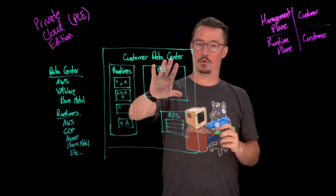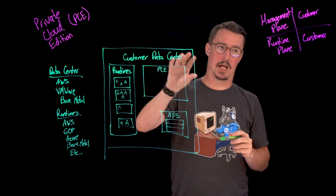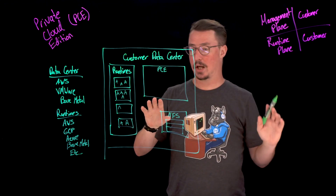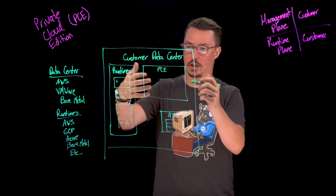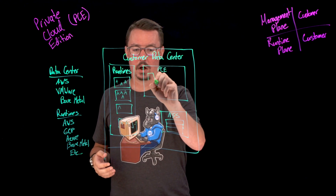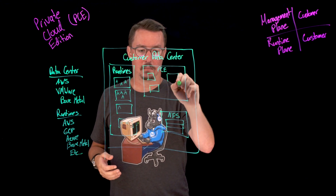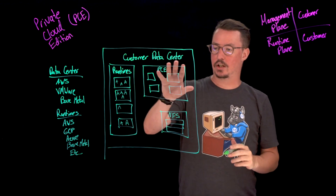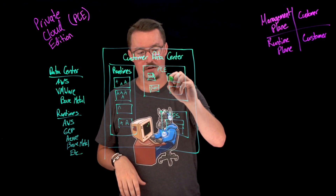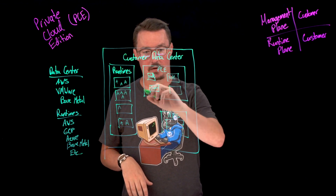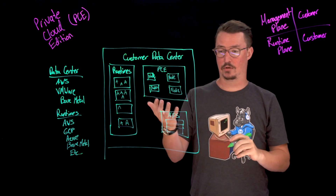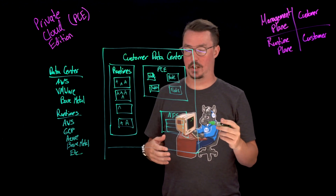Moving over to our PCE, this is where the real magic is going to be happening. This is the part that's unique to Private Cloud Edition from every other deployment model — the other deployment models don't have this hosted in a customer data center. Essentially what we have here is a series of nodes that will all be deployed across Kubernetes. There is a requirement for the number of these nodes: you can have a small deployment, which is going to have four nodes, or you can have a large deployment, which is going to be seven nodes.